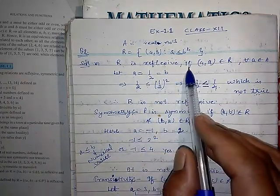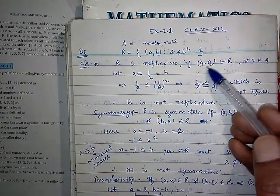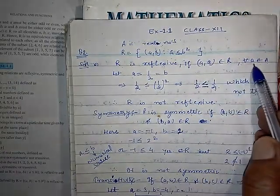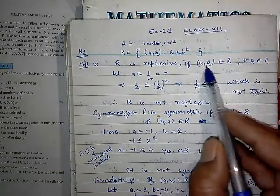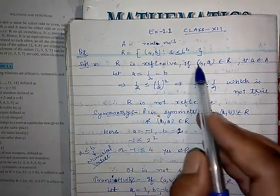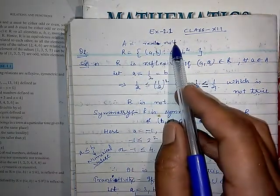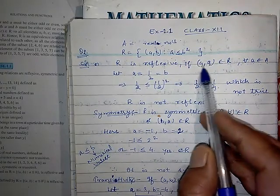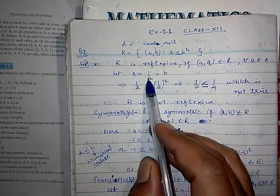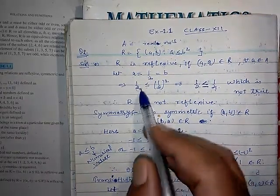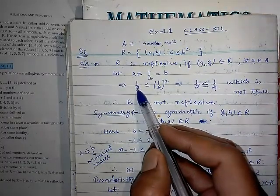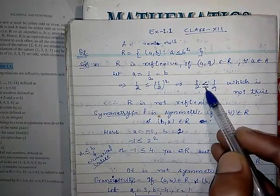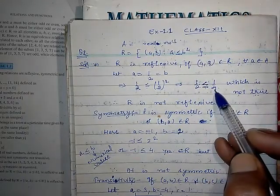This is a simple question — only a hint is required on how to solve it. Write down first: let A be the set of real numbers, and R = {(a,b) such that a ≤ b²}. For R to be reflexive, (a,a) must belong to R for all a in A. So let us suppose a = 1/2. In place of a and b you take the same value, 1/2. Putting a = 1/2 and b = 1/2: is 1/2 ≤ (1/2)² = 1/4? Is 1/2 less than 1/4?